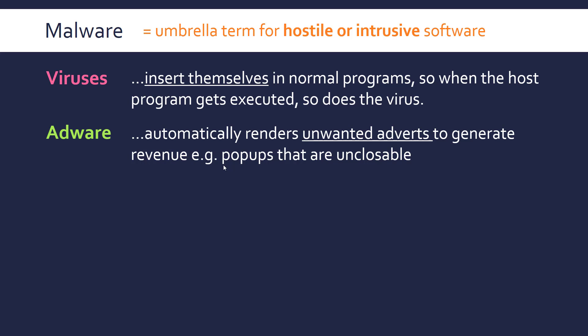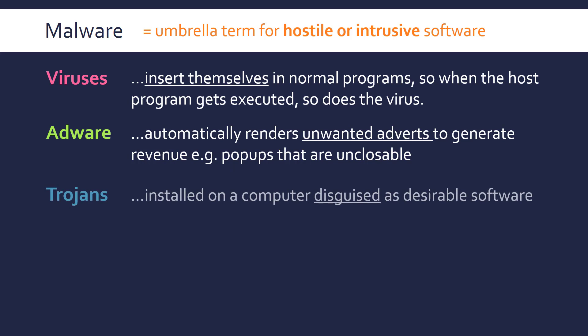Adware can often be a gateway to other types of malware. The next are Trojans, which share the name from the Trojan horse in the Greek story. Like that, they are disguised software — installed on a computer disguised as normal software you actually want. But at a predetermined time, maybe a week after you install it, the malware hidden within it will activate and take over this previously desirable software.